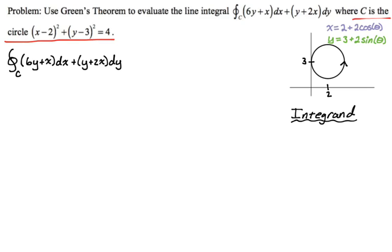So my determinant looks like first row is the partial derivatives, and then the second row is P and Q. So it's going to be 6y plus x, and y plus 2x. So that evaluates to the derivative of y plus 2x with respect to x is just 2, and the derivative with respect to y of 6y plus x is minus 6. So overall, our integrand is going to be negative 4. So that's not bad.